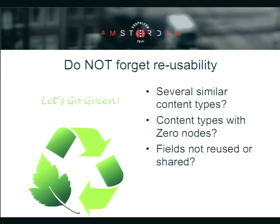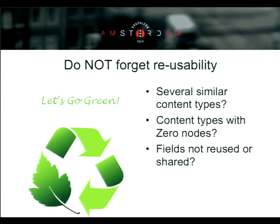The second thing about reusability is fields. Drupal 7 provides a fantastic way of sharing fields. The image field is the best example — you can actually reuse the same field across multiple content types. The advantage: one table is created per field in Drupal's backend. So if you create five separate image fields, five tables will be created with complex joins when running views queries. Instead, if you have just a single shared field across multiple entities — users, taxonomy terms — it becomes much more efficient at the database level.